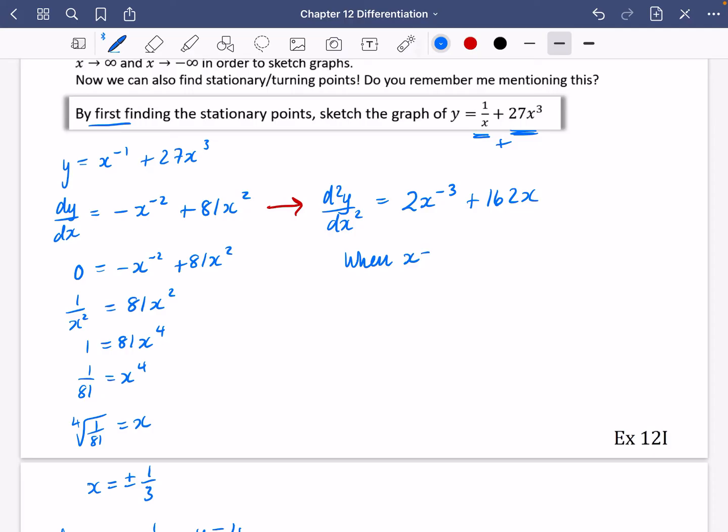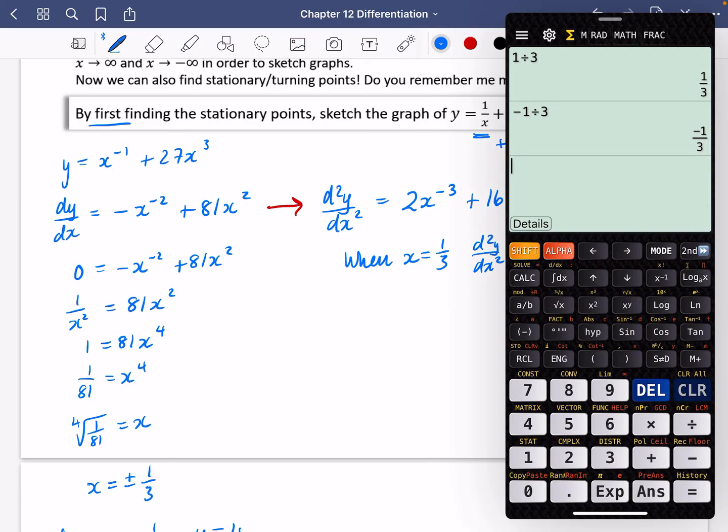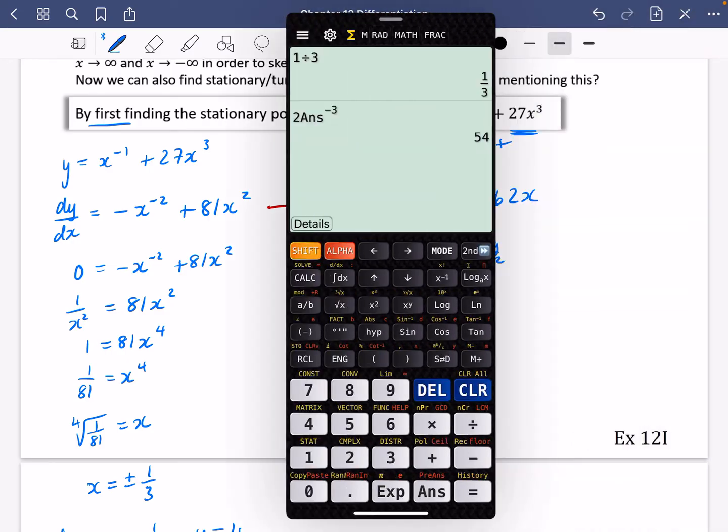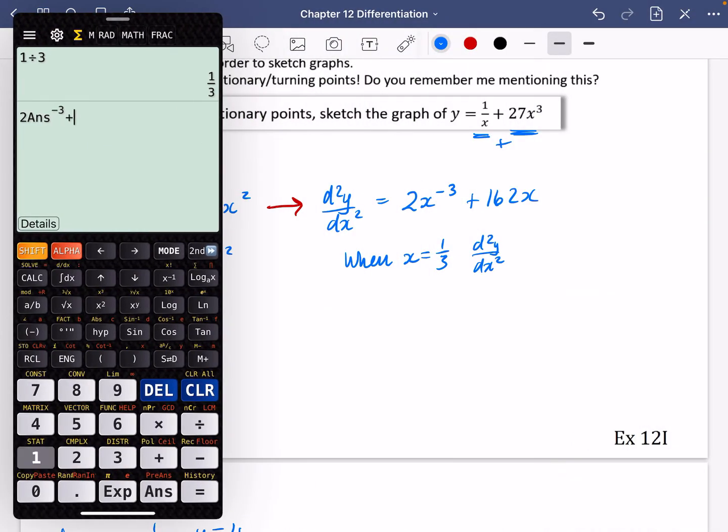So when x is equal to a third, the second derivative, let's see what it's going to be equal to. I'm going to do a third, store that as my answer. So I'm going to do 2 answer to the power of minus three plus 162 of the answer. And we get 108, which is greater than zero. So if it's greater than zero, every way you're looking is going up. So it means it's a minimum.